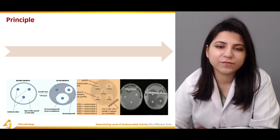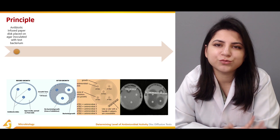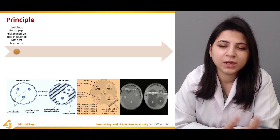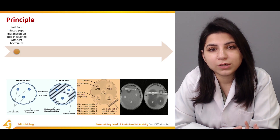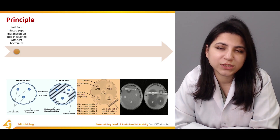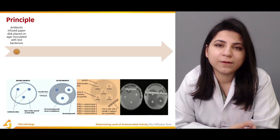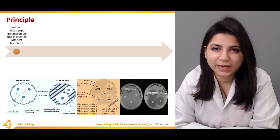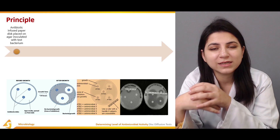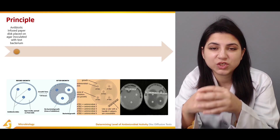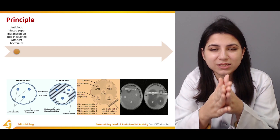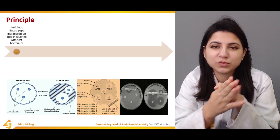The principle behind the disk diffusion test is that you take antibiotic-infused paper disks placed on agar inoculated with the test bacterium. You need to select a colony against which you want to check the activity of the antibiotic. You grow that colony on an agar plate, meaning the culture plate already contains the bacterial colony to be checked. After that, you select the antibiotic to be tested.